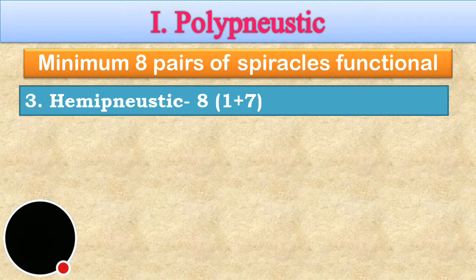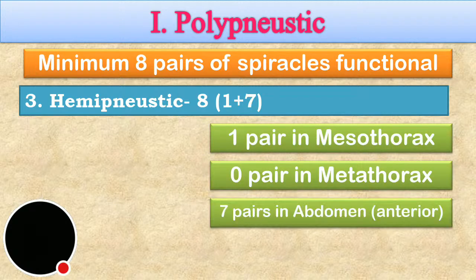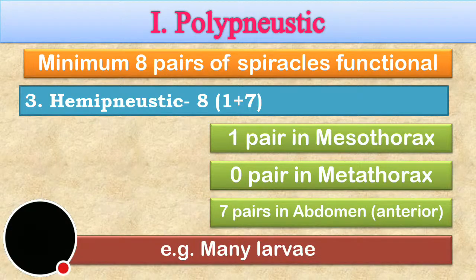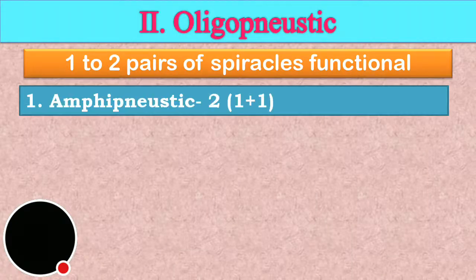In heminoistic, eight pairs are functional: one from mesothorax and seven from the anterior abdominal segments. In oligonoistic, there are one to two pairs of spiracles functional, as you can see.